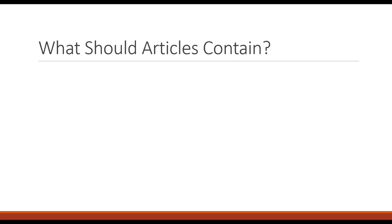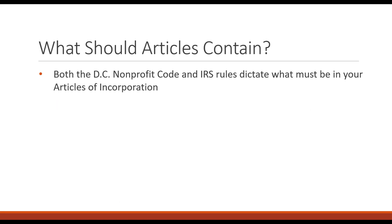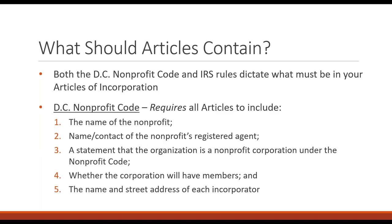What should articles contain at a high level? Both the DC Nonprofit Code and the IRS have rules affecting what needs to be in your articles. The DC Nonprofit Code requires essentially five things: the name of your nonprofit organization; the name and contact information of your registered agent; a statement that the organization is a nonprofit corporation and will abide by the DC Nonprofit Code; a yes or no on whether the corporation will have members; and the name and street address of each incorporator.